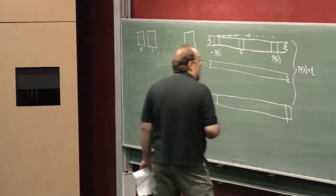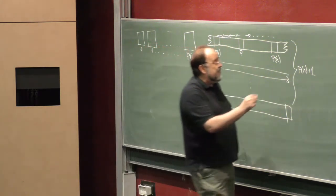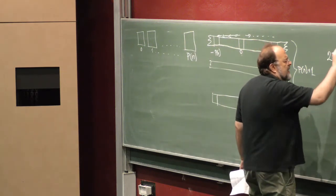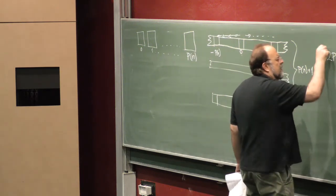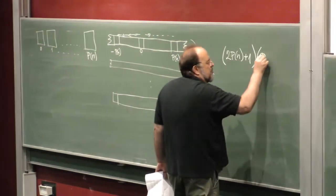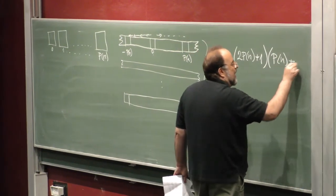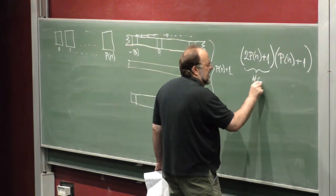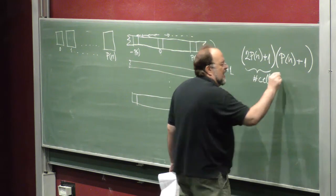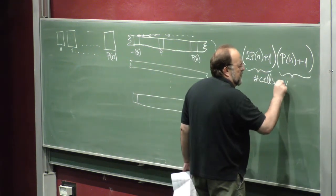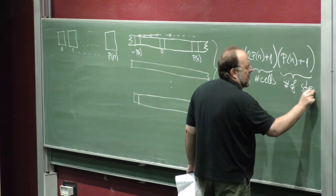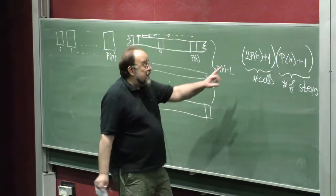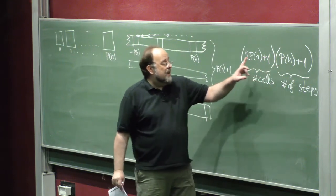The same applies if the machine moved all the time to the right — the farthest cell scanned will be cell p(n). So in total we need variables covering 2·p(n)+1 many cells, and we need such variables for each stage of the computation. The number of stages is also p(n), so altogether for the cells we need (2·p(n)+1) × (p(n)+1) many variables. This is a lot of variables, but polynomially many.